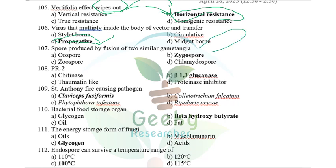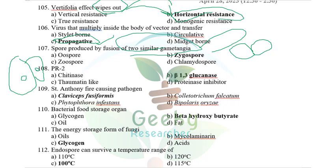Spores produced by fusion of similar gametangia are zygospores. I initially thought it was oospore, but oospore is formed from dissimilar gametangia (antheridium and oogonium). Zygospores are formed by fusion of two similar gametangia. Chlamydospores and geospores are asexual/vegetative spores.